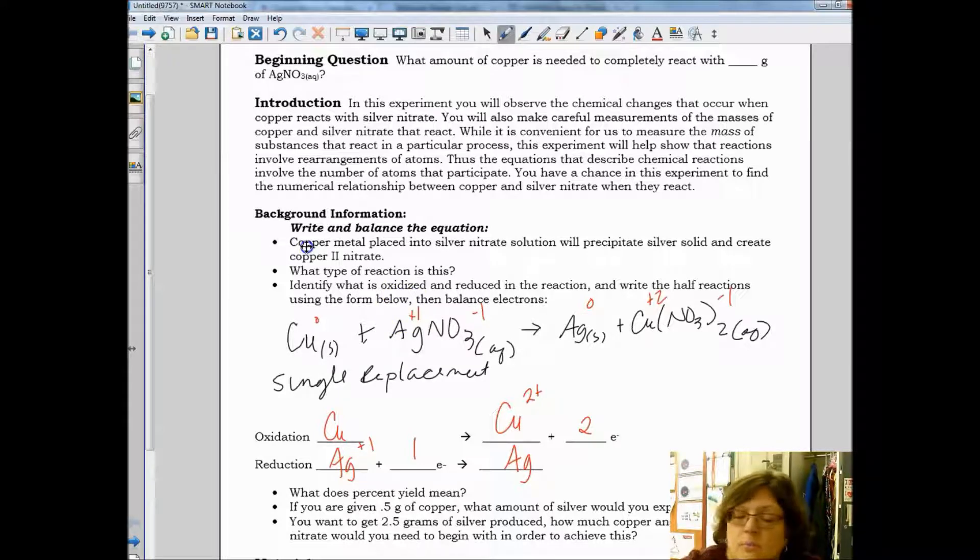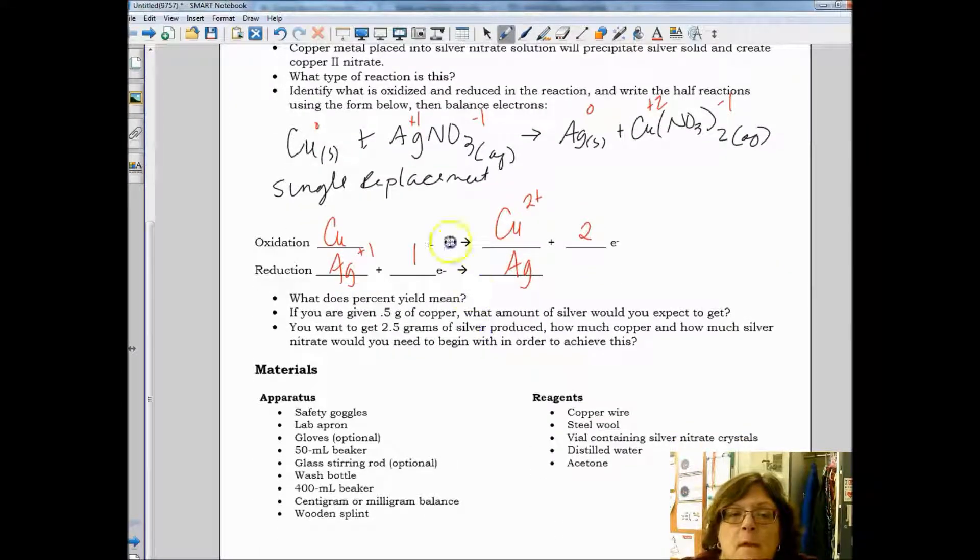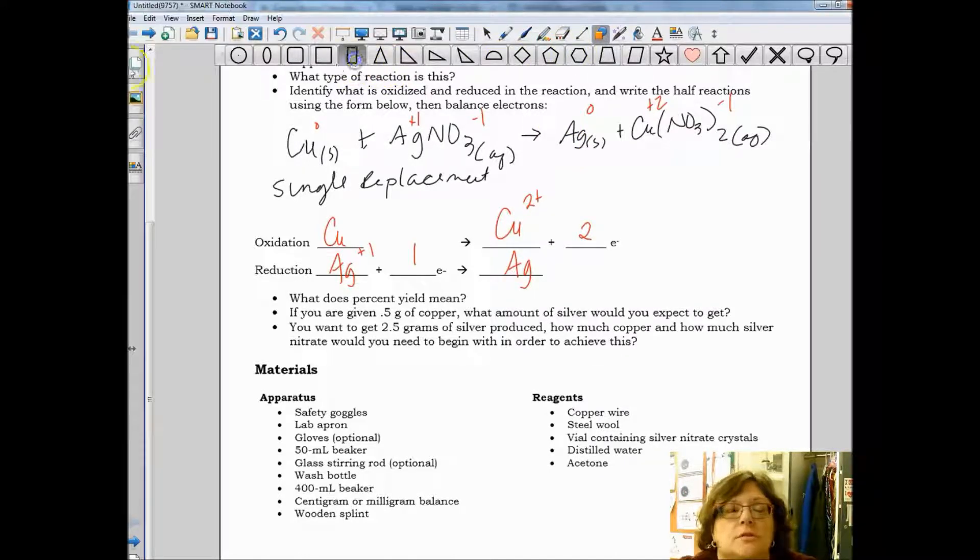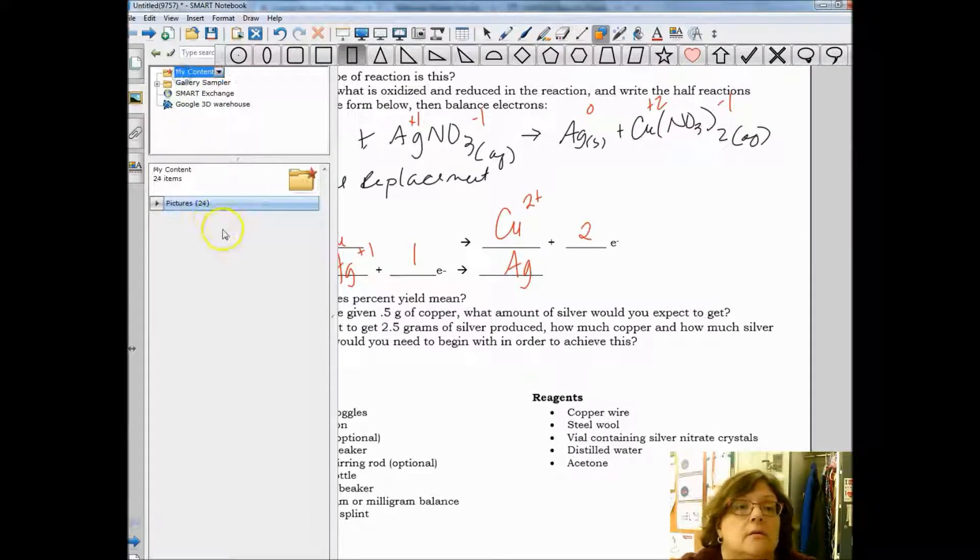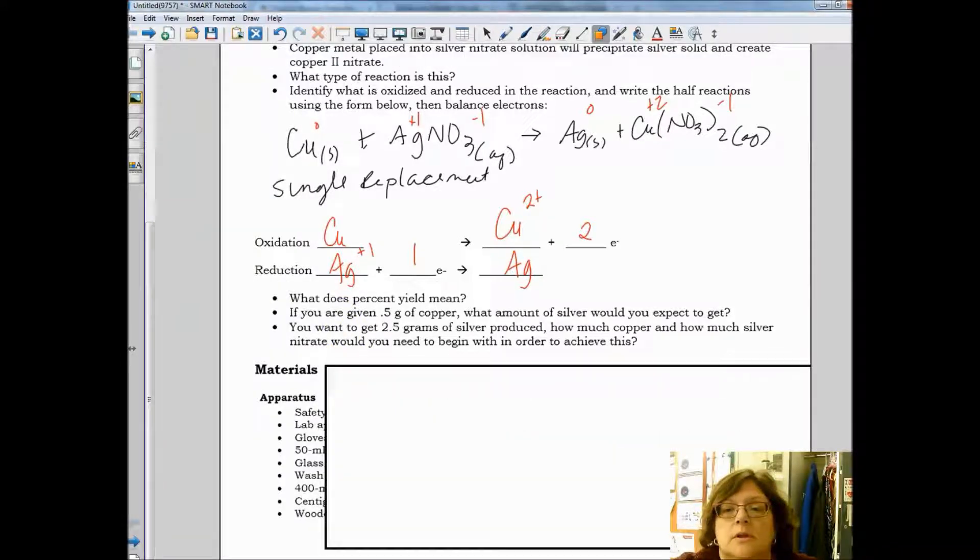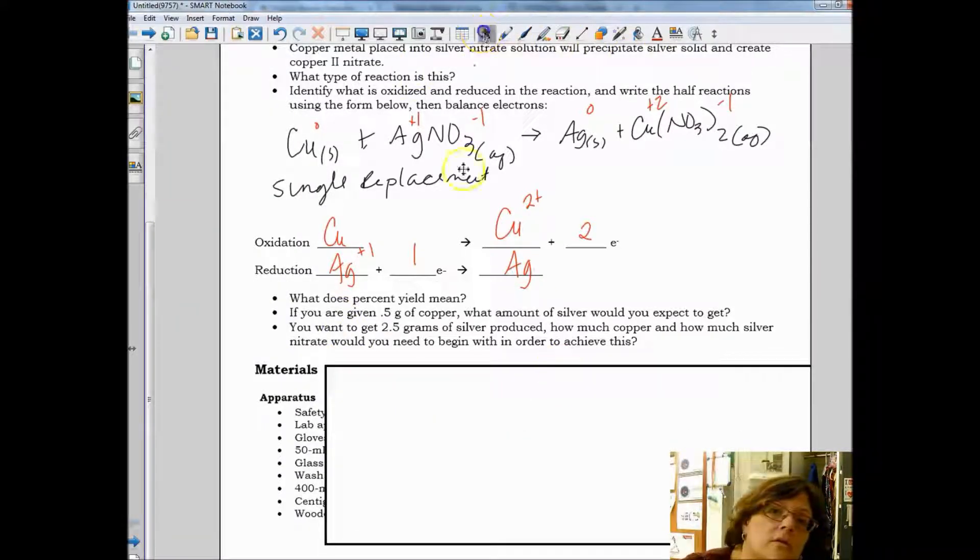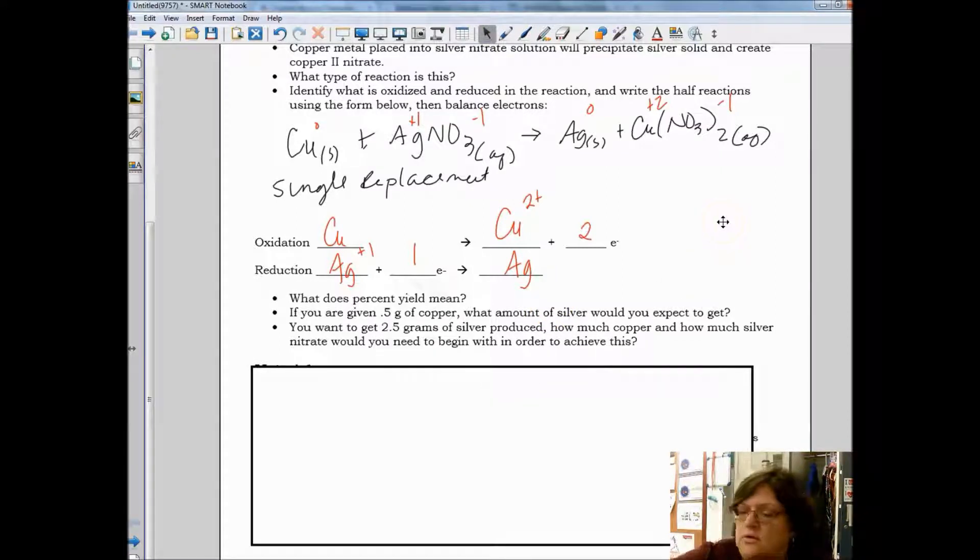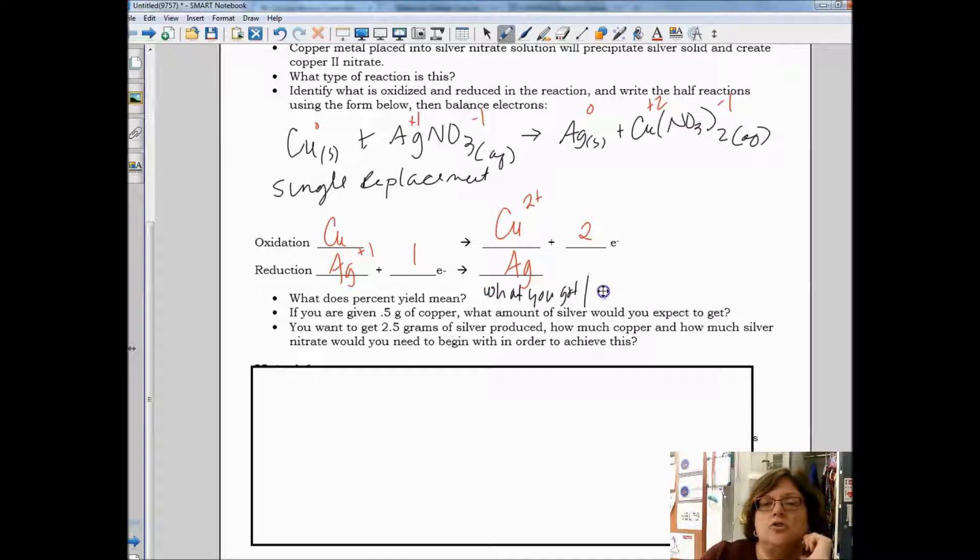The next thing on here, it asks you what does percent yield mean? Percent yield means the percent that you produced. In other words, we know how to do percent, the part divided by the total. We're going to figure out the amount that we produced compared to what we should have produced. So percent yield is going to be what you got divided by what you should have gotten.